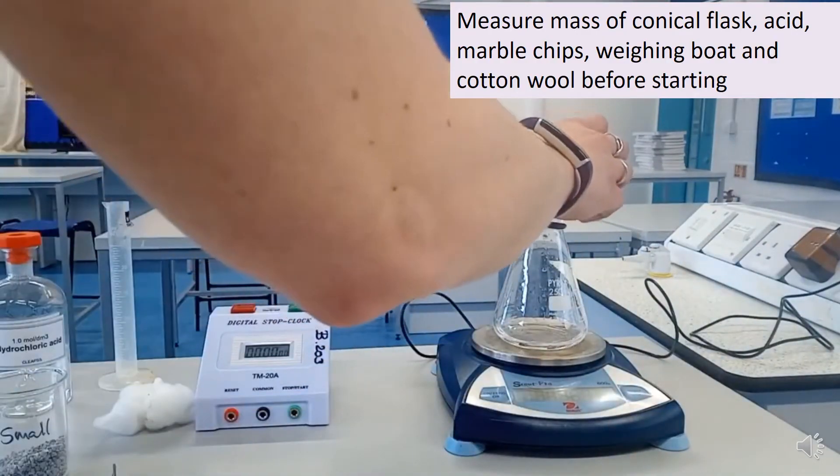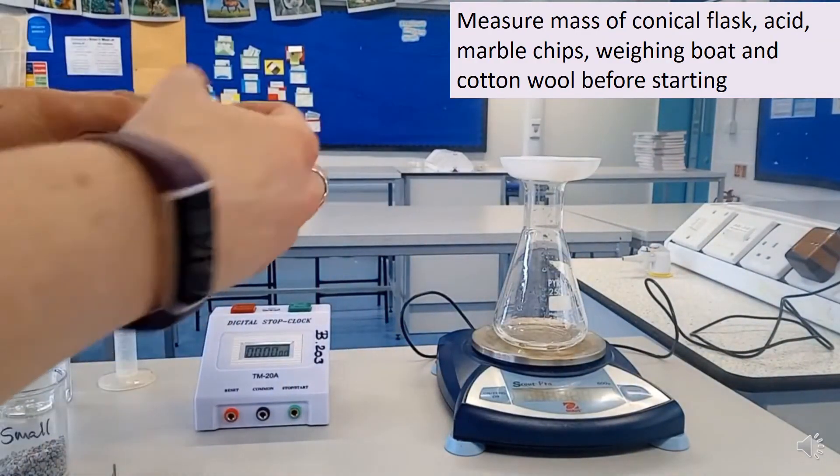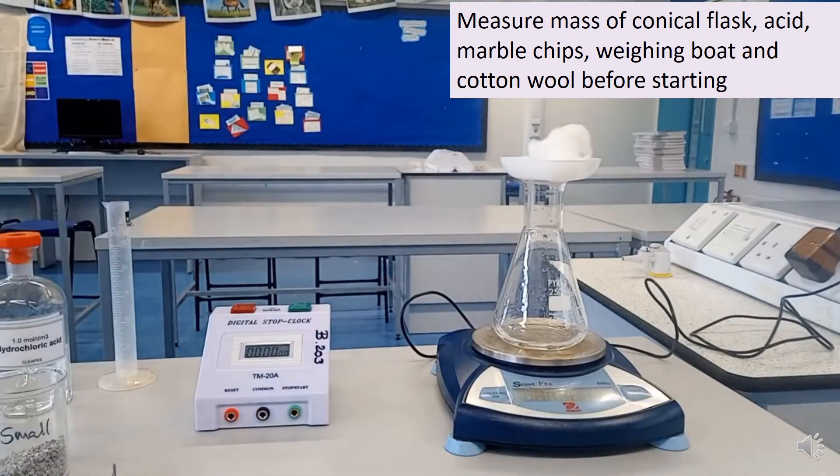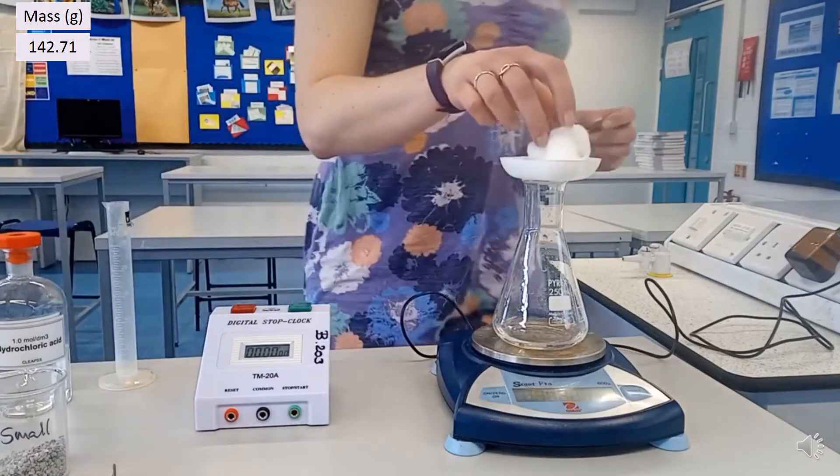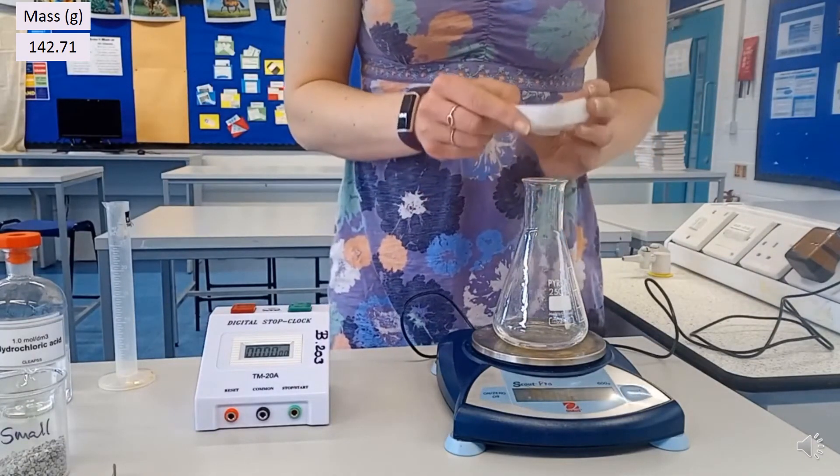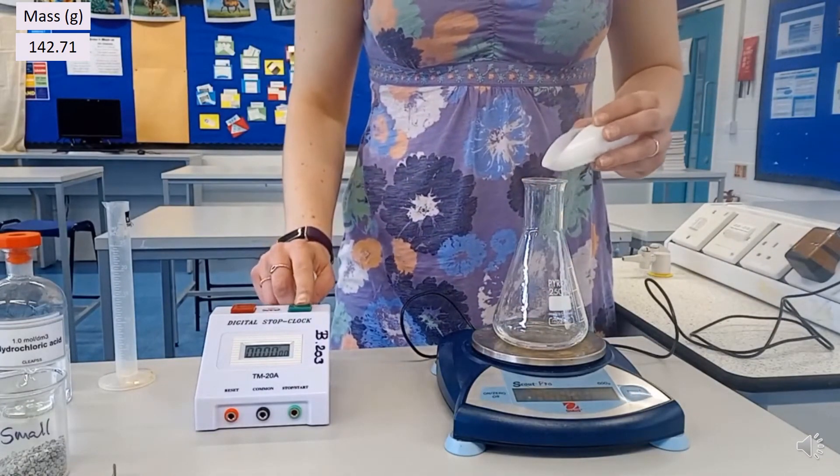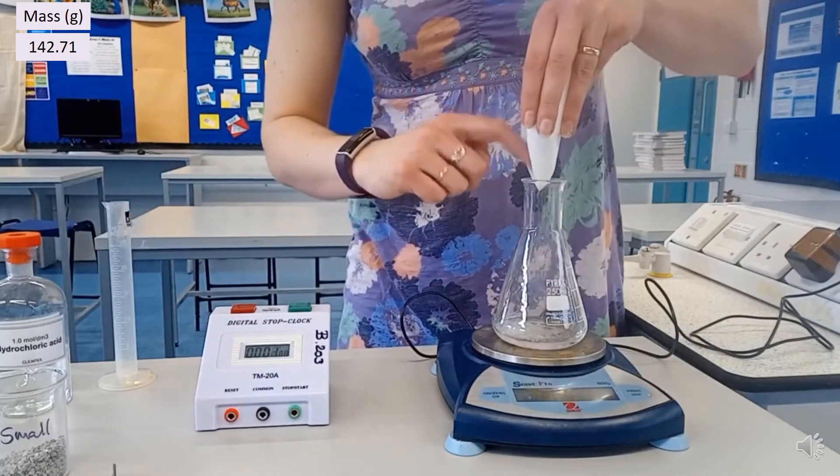Having measured the volume of the acid and the mass of the marble chips that I'm going to add, before starting the chemical reaction, I measure the mass of all of the reactants and all of the equipment that I'm going to use. Here, this is 142.71 grams. The reason that I do this is that when I add the marble chips to the acid, the reading on the balance often fluctuates, and this can make it hard to write down accurately what the mass is at the start of the reaction.